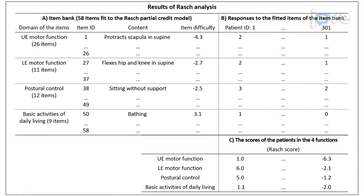Establish an item bank for the testing system by adopting the bank from the study. Retrieve the item difficulties of all items in the bank as well as each patient's responses. Also retrieve the ability distribution of the patients for four functions: upper extremity motor function, lower extremity motor function, postural control, and basic activities of daily living.